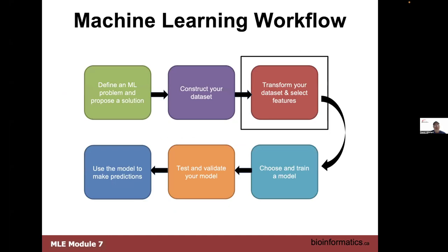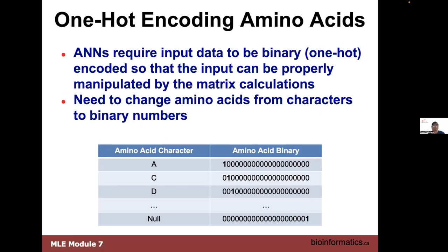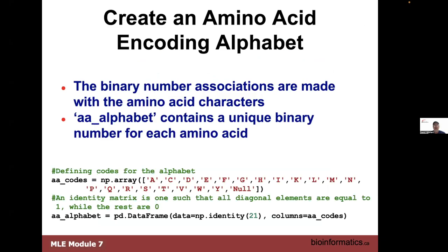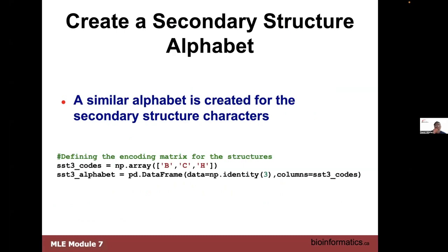We also have to do some transformation and feature selection. This is where we once again use one-hot encoding — we did the same one-hot encoding for the neural net for the Iris data when we used Keras. We're using the same one-hot encoding here with null characters included, so our alphabet is 21 amino acids — not 20 — with the extra amino acid called 'null'. We're also using the same binary encoding for the three secondary structures: beta sheet, coil, and helix.